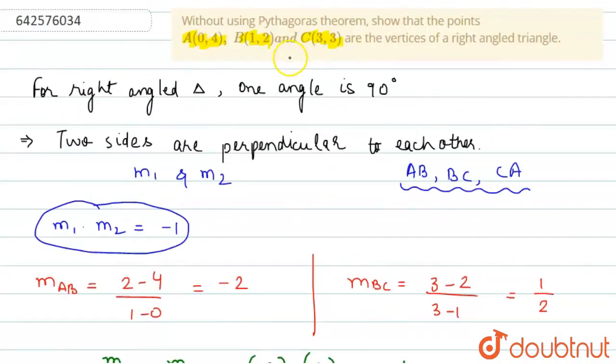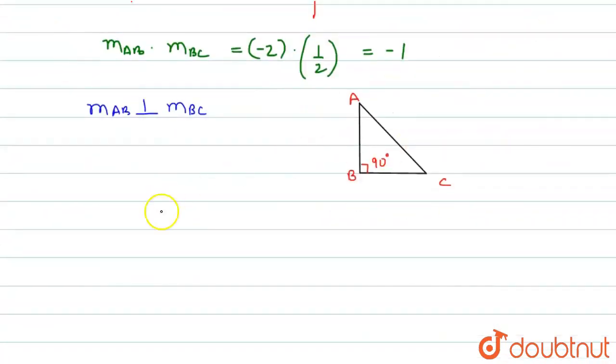So now, we have proved that ABC is a right-angled triangle. Thank you, students.